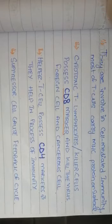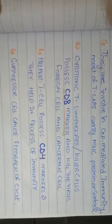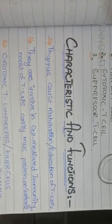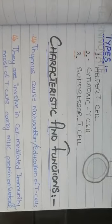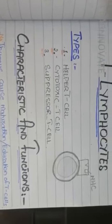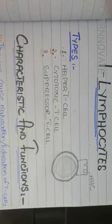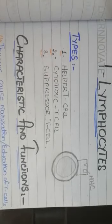So these are the characteristics and functions of the thymic lymphocytes. These lymphocytes originate in the bone marrow, mature in the thymus, and are released into the body to provide important immune functions.